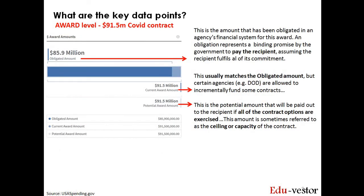The next important fields are the three definitions of the dollar amount. The obligated amount means Palantir will receive $85.9 million for the work they have done. Current award amount usually matches the obligated amount, but in certain cases such as this example, the amount can be higher than the obligated amount. The last definition is potential amount, which assumes all options of the contract are being exercised — in other words, this is the maximum Palantir can expect to receive from the contract. For simplicity, I will only focus on the obligated and the potential award amount in this video.